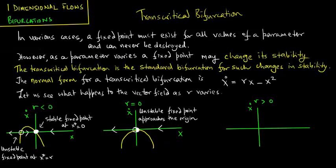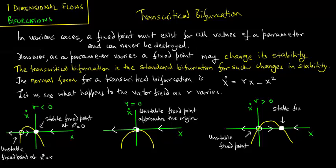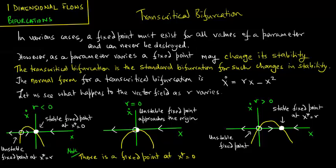For r greater than 0, we plot x̊ versus x again. We find two fixed points: an unstable fixed point at the origin and a stable fixed point at x* = r. Note that there is a fixed point at x* = 0 for all values of r.